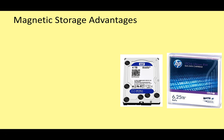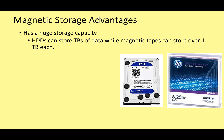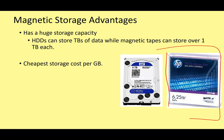The advantages of magnetic storage: basically, huge storage capacity. Hard disk drives can store many terabytes of data on a single drive, while even magnetic tapes can store over one terabyte each. That means they have a very cheap cost per gigabyte. For example, a magnetic tape with 6.25 terabytes was available on Amazon for about £35, and a 4 terabyte Western Digital hard disk drive was about £80. You can get a lot of storage for only a small cost.